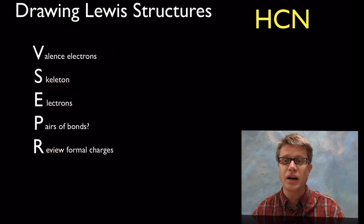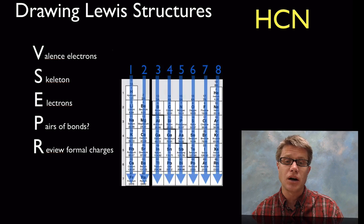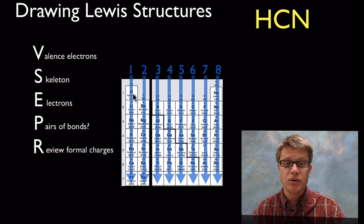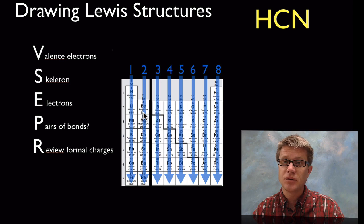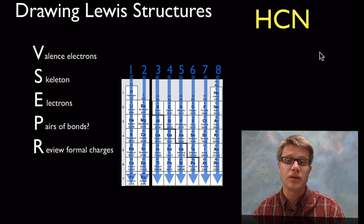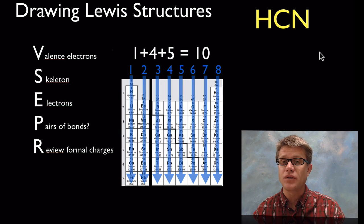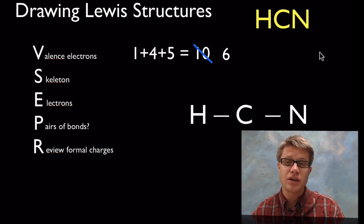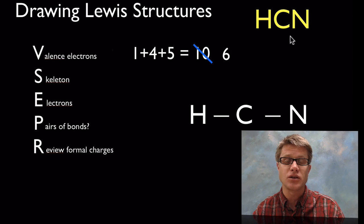Let's start with hydrogen cyanide. To draw its Lewis structure, the first thing we want to do is add up the total number of valence electrons. To figure out valence electrons we ignore the metals — the d block. Hydrogen has one valence electron, beryllium has two, carbon has four. So for hydrogen cyanide that's one plus four plus five equals ten. We then sketch out the skeleton by drawing bonds between each of the atoms as they appear in the molecule.